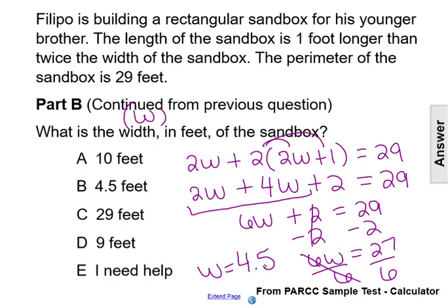So if w equals 4.5, that means the width in feet of the sandbox is 4.5 feet, making our answer choice B.